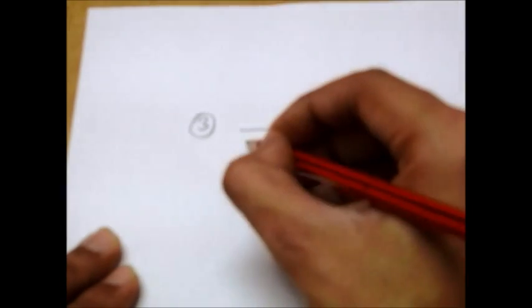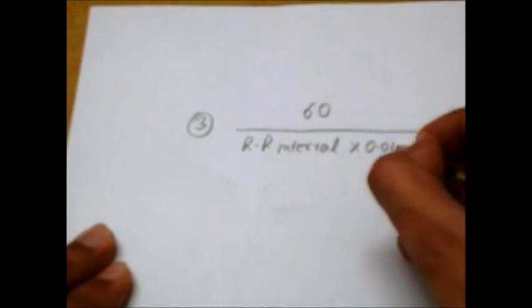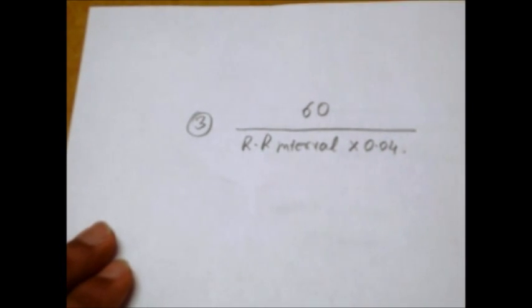Now let's see one more method: 60 divided by the RR interval in small boxes, multiplied by 0.04 if the speed is 25 mm per second, or 0.2 if the speed is 50 mm per second.